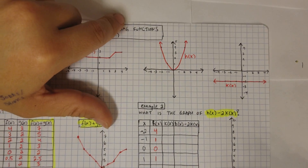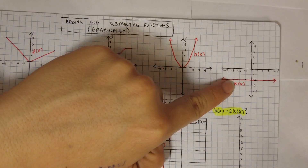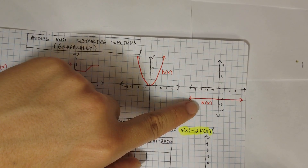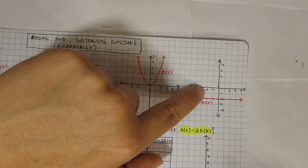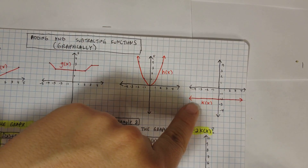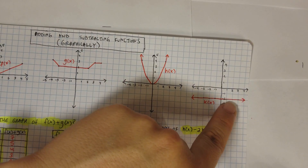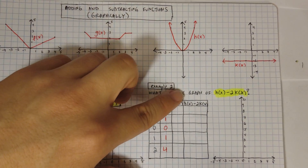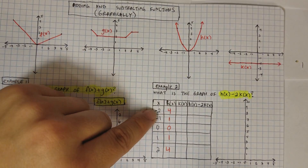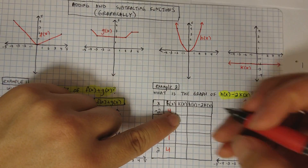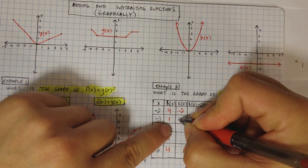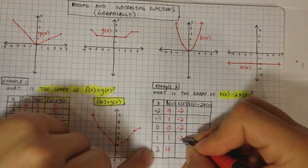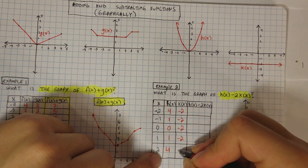Now for k(x), which is on the right-hand side, I need the values for the domain from negative 2 to 2. If you notice, this one is constant — it's always going to be negative 2. So k(x) = negative 2 for all x values: at negative 2 it's negative 2, at negative 1 it's negative 2, at 0 it's negative 2, at 1 it's negative 2, and at 2 it's negative 2.